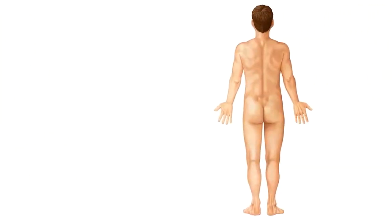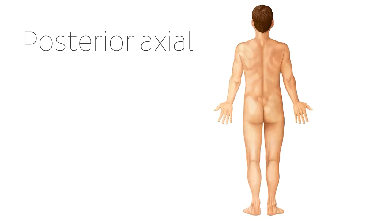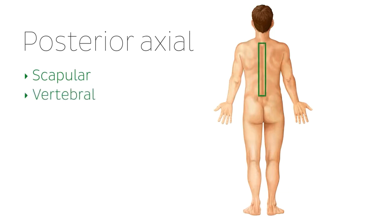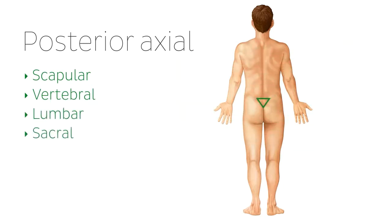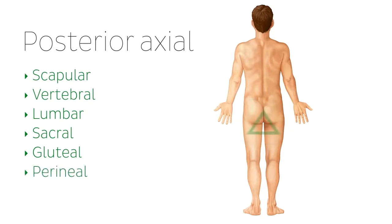Now let's look at the regions of the posterior or dorsal axial region. In this image of our male, we can clearly see the scapular region in the area of the scapula, the vertebral region which includes the vertebral column, the lumbar region which refers to the lower back including the lumbar vertebrae, the sacral region which refers to the area of the sacrum, the gluteal region which refers to the buttocks, and the perineal region located in the area around the anus.